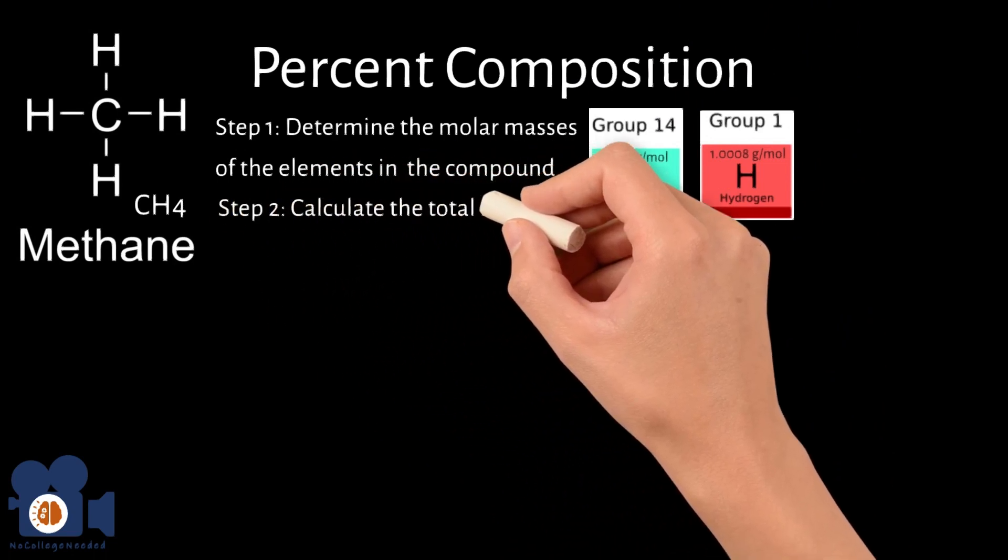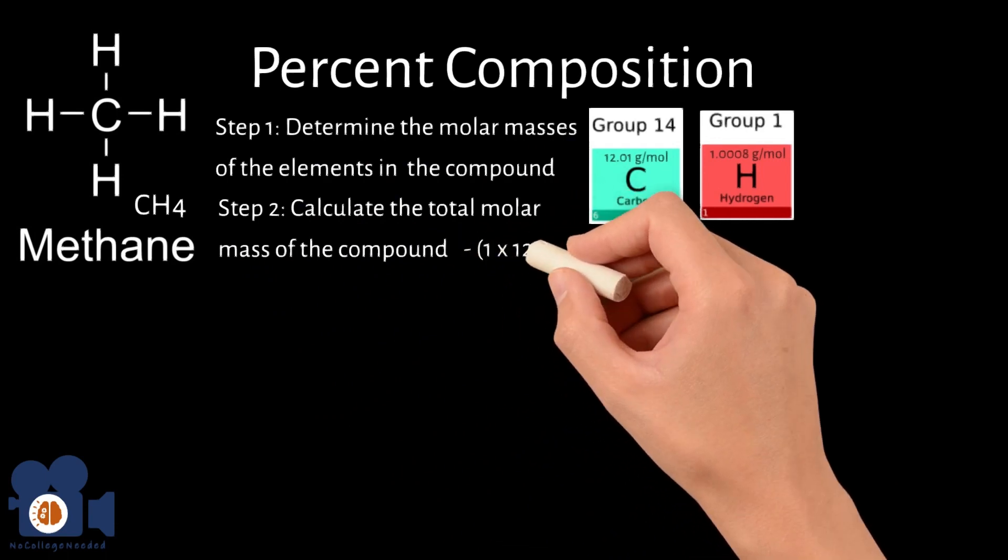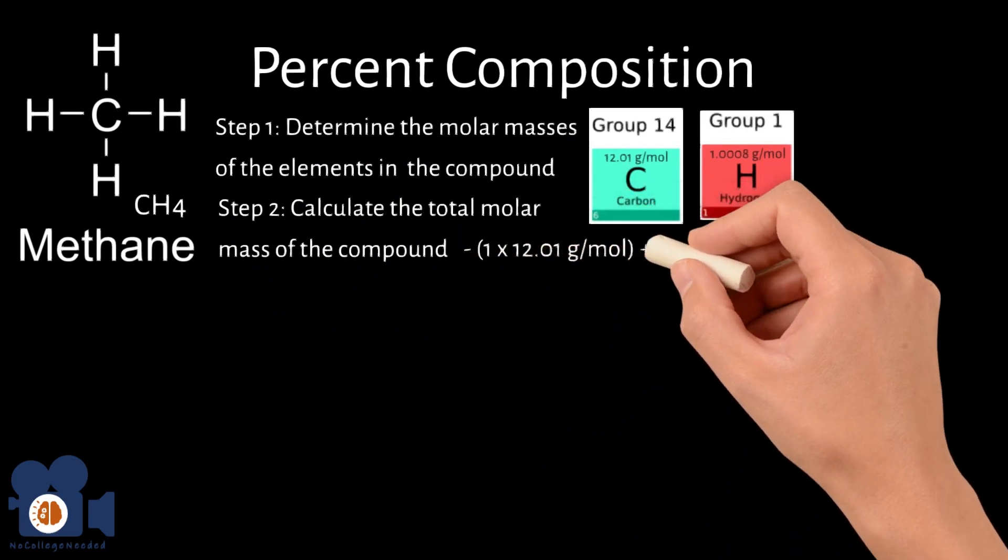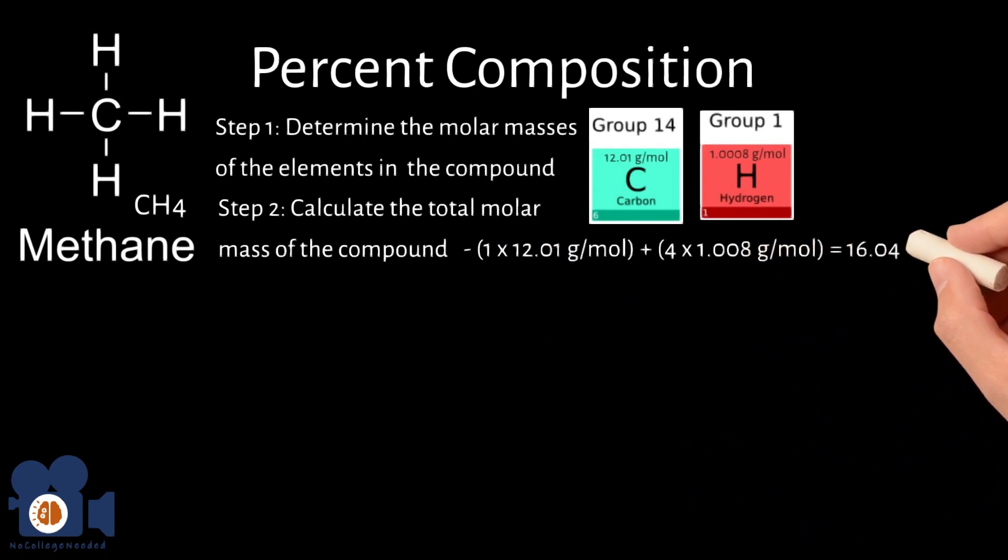Step 2: Calculate the total molar mass of the compound. The total molar mass of methane, CH4, is 1 times 12.01 grams per mole plus 4 times 1.008 grams per mole equals 16.04 grams per mole.